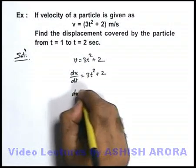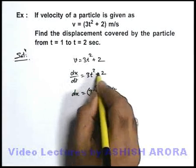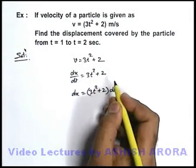Further we can write dx is equal to 3t² plus 2 into dt. We just separate the variables as here the terms of time are there. We just take this dt on the other side.